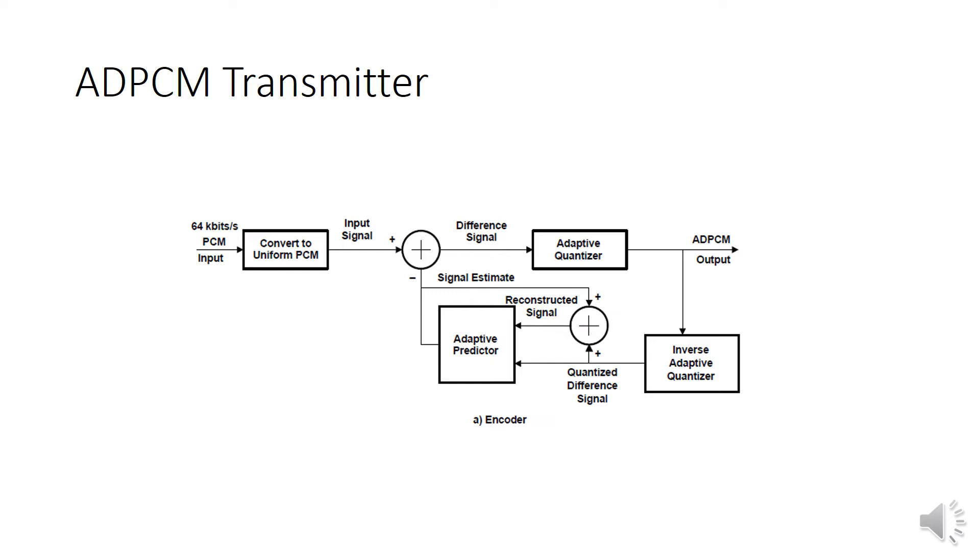Here we have the 64 KBPS PCM input. This is given to convert to uniform PCM. Then we have the summer, the input signal is given to the summer. The difference signal is given to the adaptive quantizer. Finally we get the ADPCM output. In the lower section we have the adaptive predictor connected to the summer. The signal is estimated and the reconstructed signal is added to the summer. Finally the quantized difference signal is given to the adaptive predictor. The ADPCM output is given to the inverse adaptive quantizer. This is the encoder block for ADPCM.